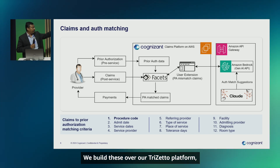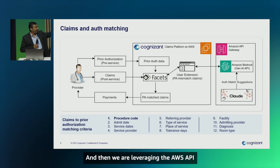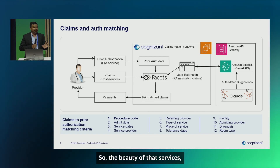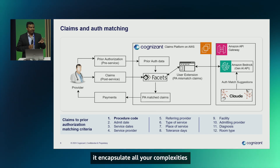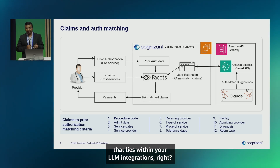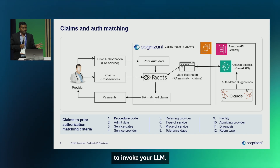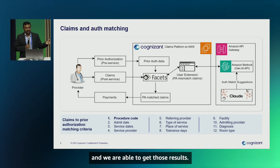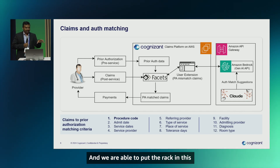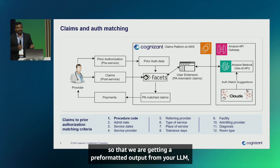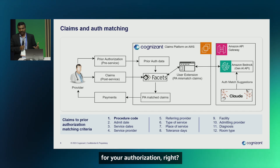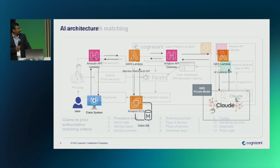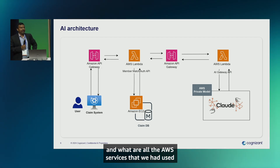We built this over our TriZo platform, which is Facets, leveraging the AWS API and Amazon Bedrock services. The beauty of Bedrock is that it encapsulates all the complexities within LLM integrations — you need not write all low-level programming to invoke your LLM. We leveraged Bedrock's capability to invoke the LLM and get results. We also put a RAG in this so we get pre-formatted output from the LLM, enabling an enhanced match for authorization. This is our high-level overview of the solution and the AWS services used to build it.